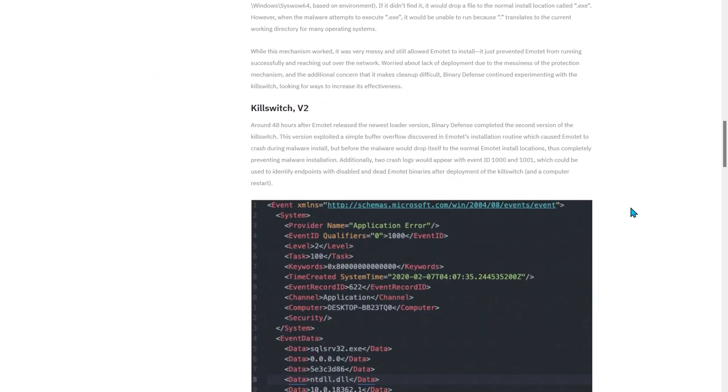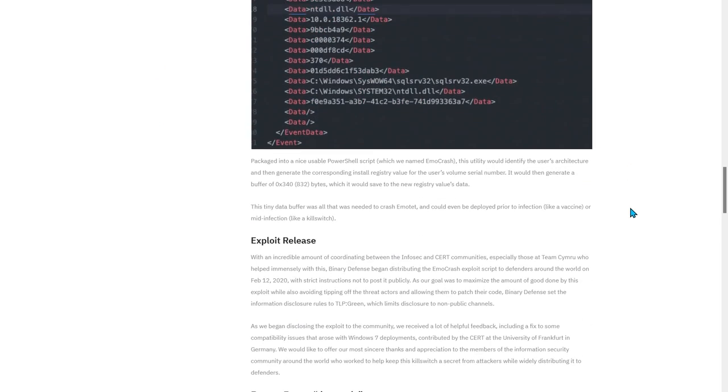It was published by James Quinn and this vaccine creates a buffer overflow in Emotet, which is a very good example of this kind of malware exploitation. But apart from infection markers and exploits, vaccines can also use system exclusions that are done by the malware.